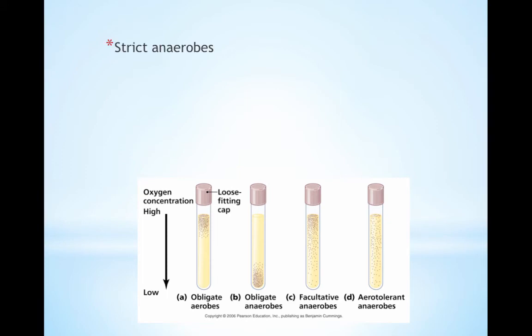Unlike muscle cells and yeast, many bacteria that live in stagnant ponds and deep soil are strict anaerobes — they require anaerobic conditions and are poisoned by oxygen. Facultative anaerobes can make ATP by either fermentation or chemiosmosis depending on whether oxygen is available. If oxygen is available, the organism will always go to aerobic respiration since it is more efficient. To make wine and beer, yeast must be grown anaerobically in large vats with one-way gas valves that vent off excess CO2 but keep air out.